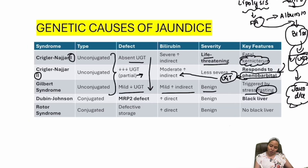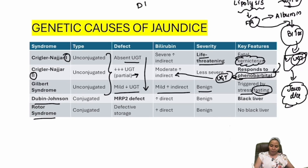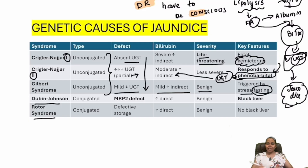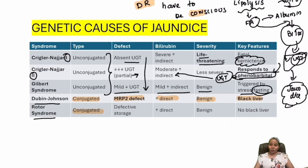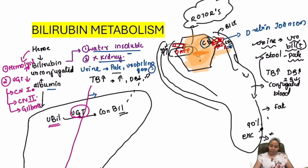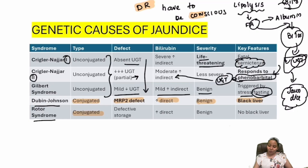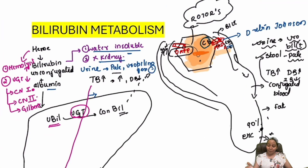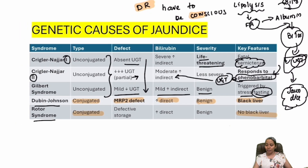Mnemonic for Dubin-Johnson and Rotor: 'DR CON' — DR stands for Dubin-Johnson and Rotor, CON stands for conjugated hyperbilirubinemia. Dubin-Johnson has a defective MRP2 transporter, causing increased direct bilirubin and a black liver because bilirubin accumulates inside the hepatocyte. Rotor syndrome has defective storage — bilirubin is already excreted outside — so there is no bilirubin accumulation in the hepatocyte and the liver color is normal.